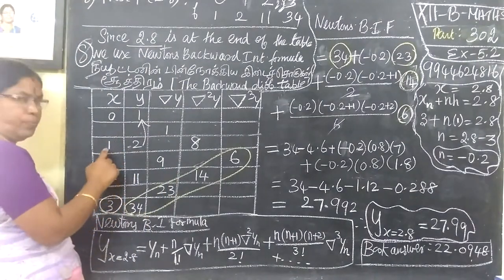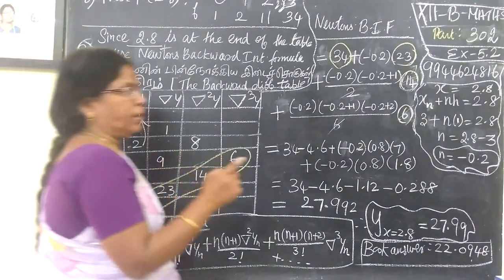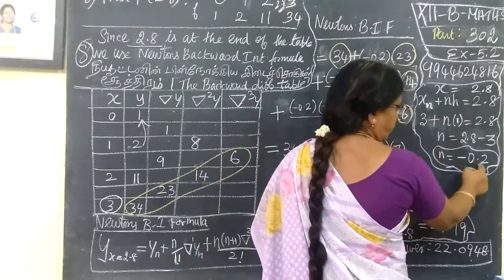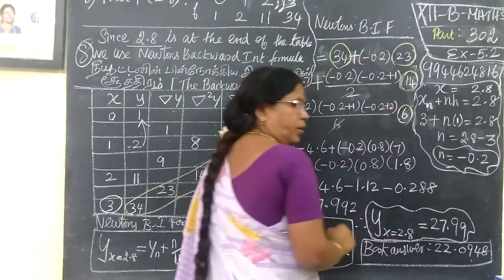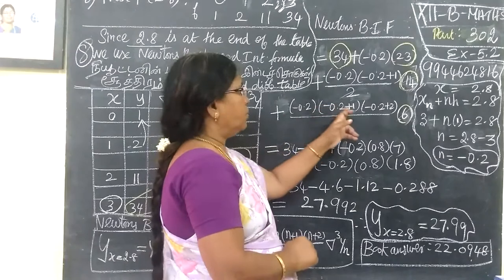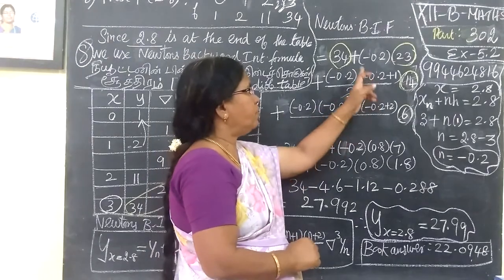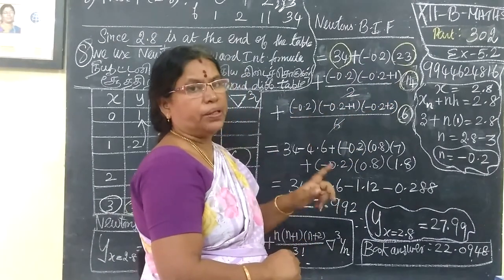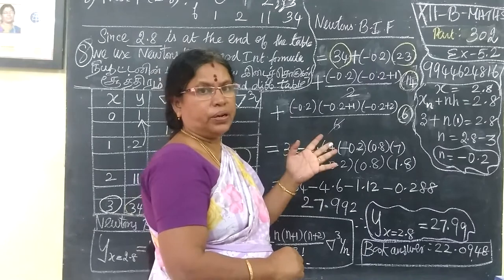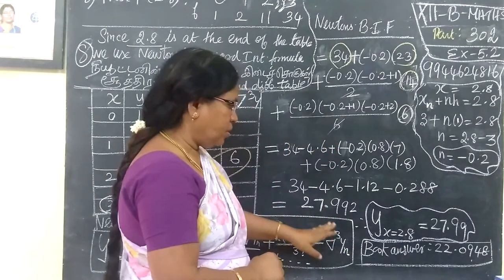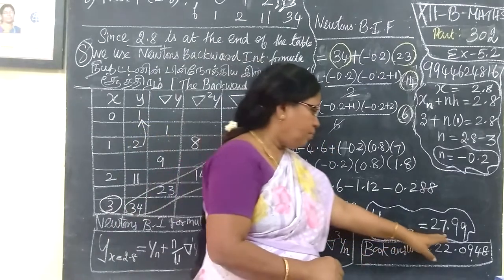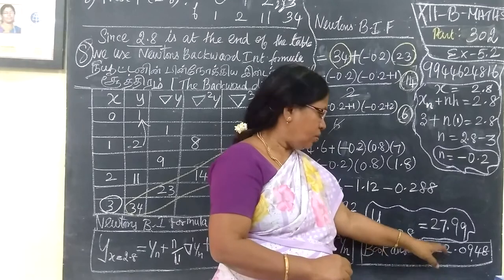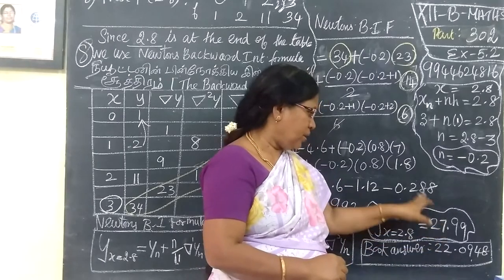The gap is equal to 1, so h is equal to 1. You are finding the n value, so this is the n plus 1. Backward of n into n plus 1, forward of n minus 1. So this is the answer.